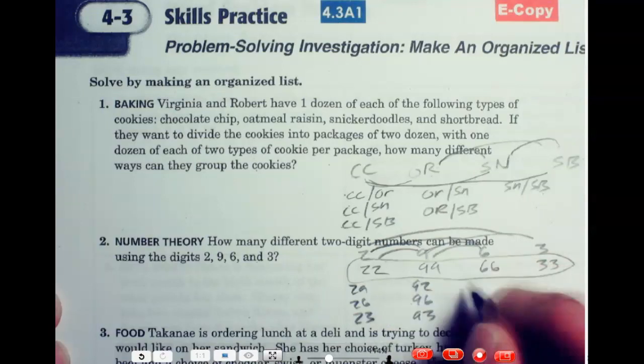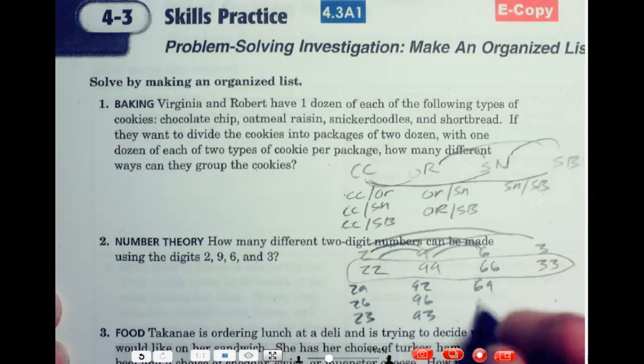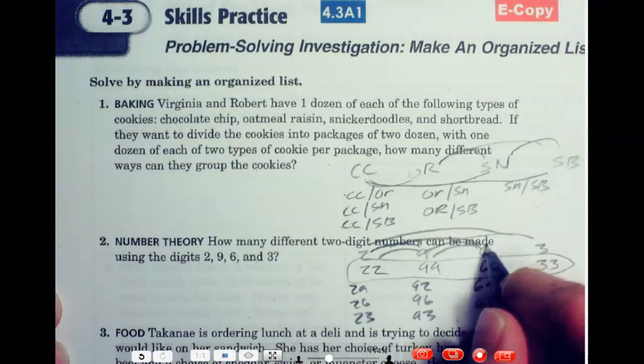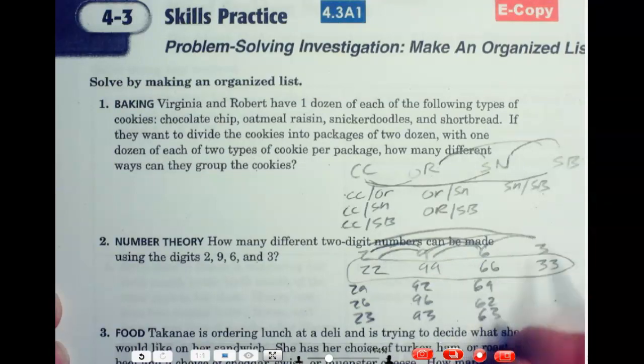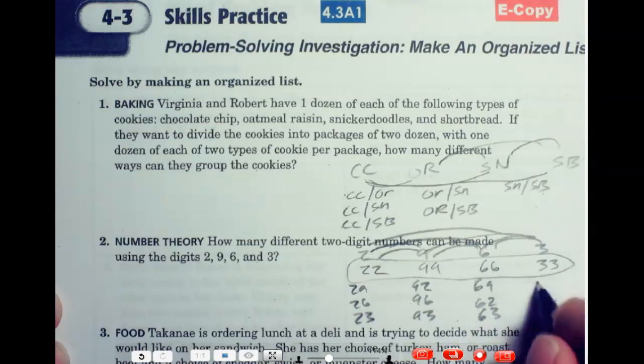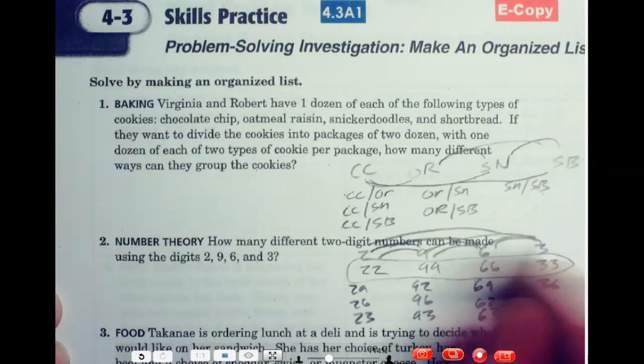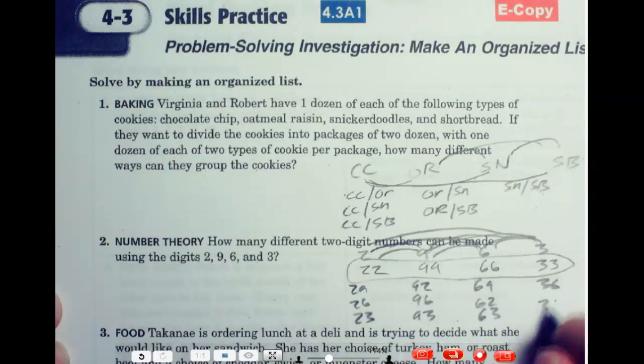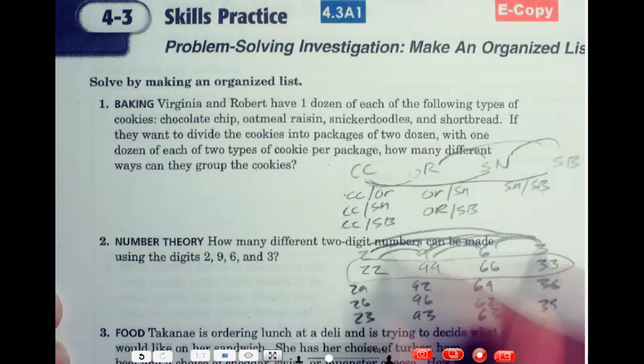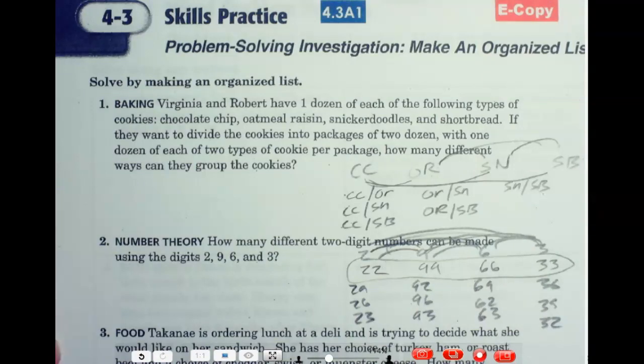I could have 69. I could have 62. I could have 63. I could have 36. I could have 39. And I could have 32. Those are all the different numbers you could possibly have.